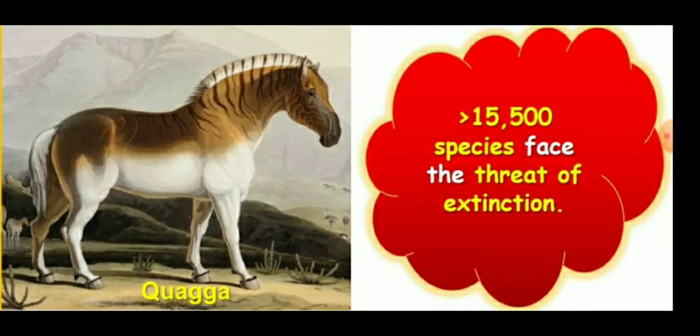Careful analysis of the record shows that extinctions across taxa are not random. Certain groups like amphibians appear to be more vulnerable to extinction. Adding to this grim scenario, more than 15,500 species worldwide are currently facing the threat of extinction.